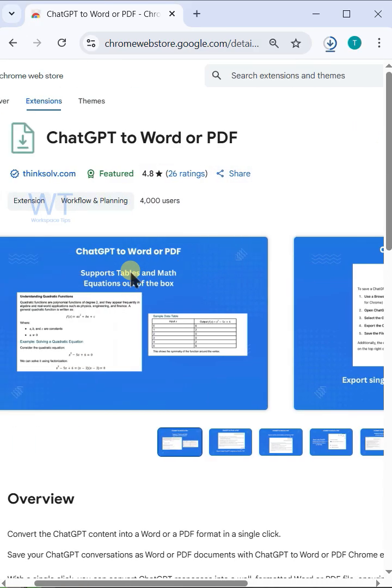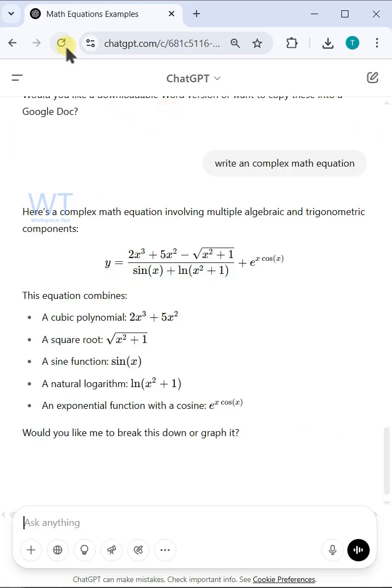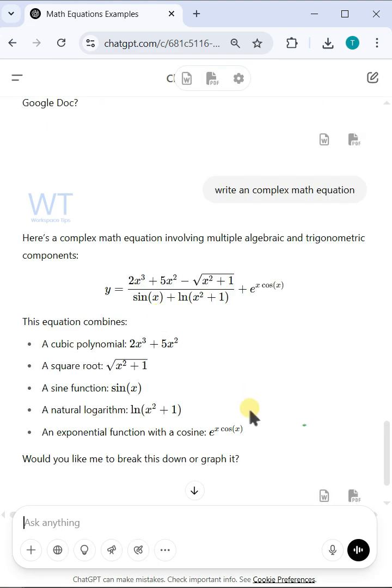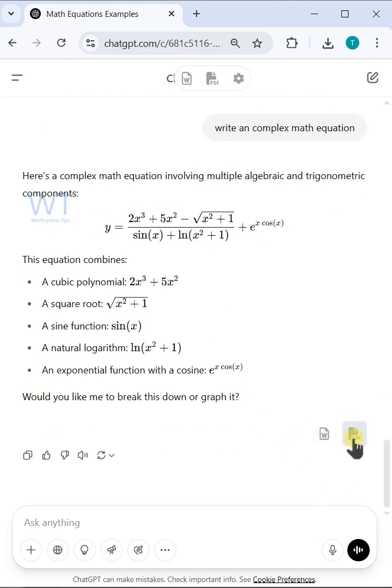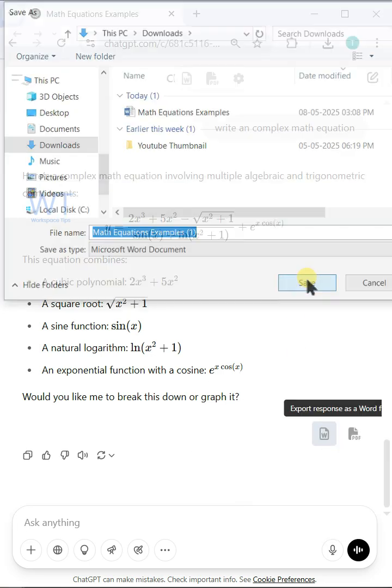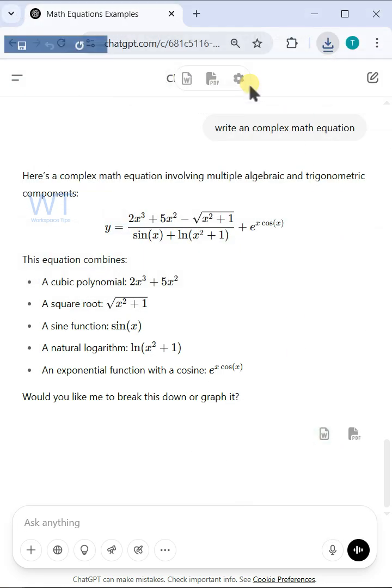After installing, go back to the ChatGPT page and refresh. You will see a Word and PDF button on every response. Click the Word button to download that answer as a Word file.